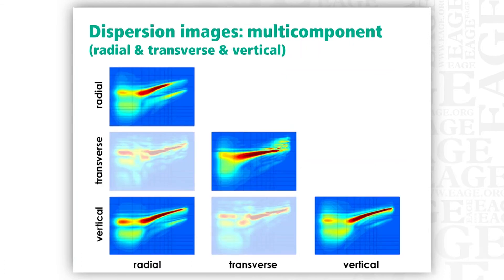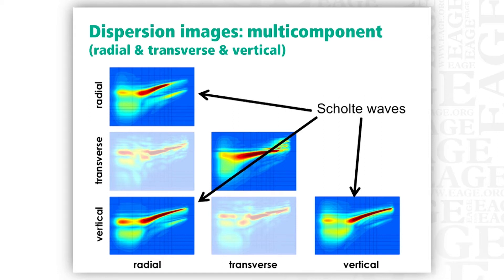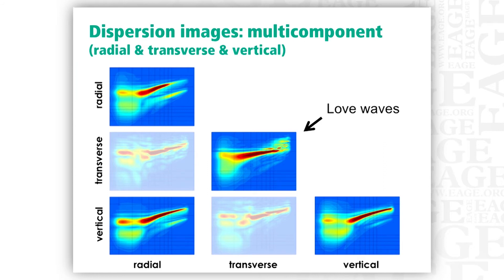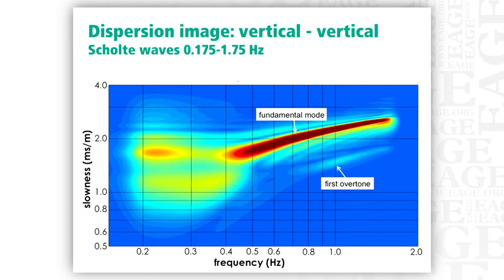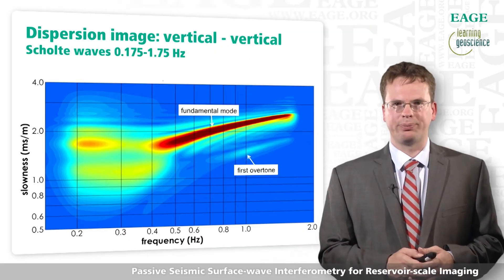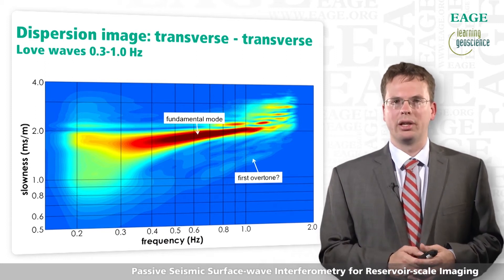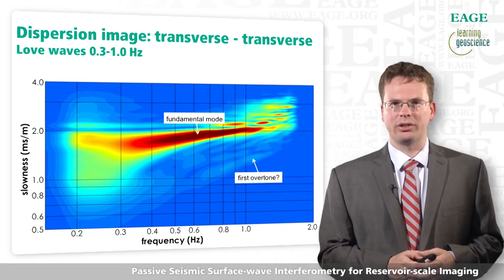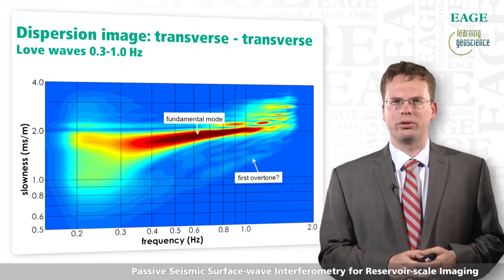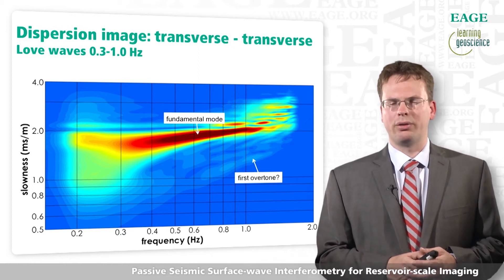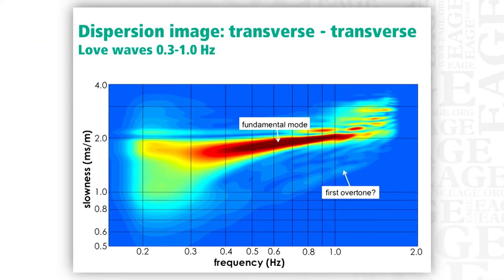We can look at an entire matrix of cross-correlations between radial, transverse, and vertical components. The vertical-with-radial, radial-with-radial, and vertical-to-vertical components contain Scholte waves — they are mostly composed of Scholte waves. But the transverse-to-transverse component is mostly composed of Love waves. The dispersion image derived from vertical-to-vertical cross-correlations is mostly Scholte waves, while the dispersion image for transverse-to-transverse cross-correlations is completely dominated by Love waves. The Love waves travel faster than the Scholte waves. There may also be a very faint first overtone visible even in the transverse-to-transverse component cross-correlations.